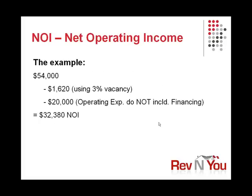Here's a quick example. If your property brings in $54,000 a year and you apply a 3% vacancy — which is standard for your particular area, market, and property type — $1,620 is your vacancy. And we use operating expenses, in this case, of $20,000 to operate the building. Again, that does not include any financing. That gives you an NOI of $32,380.